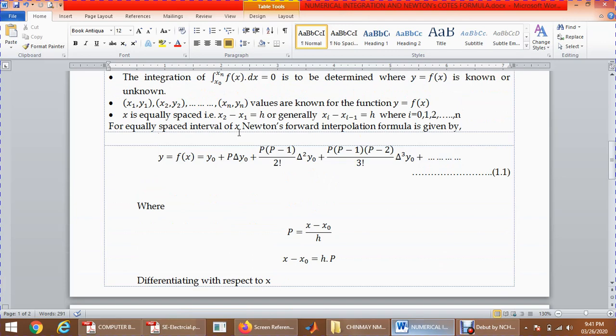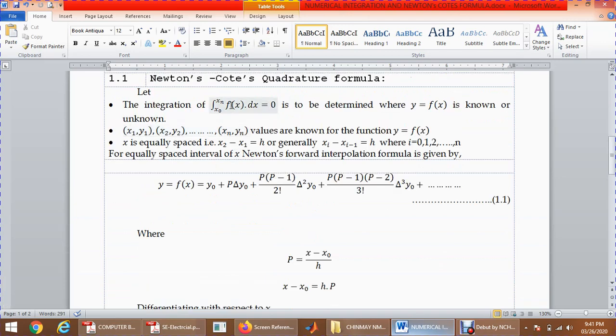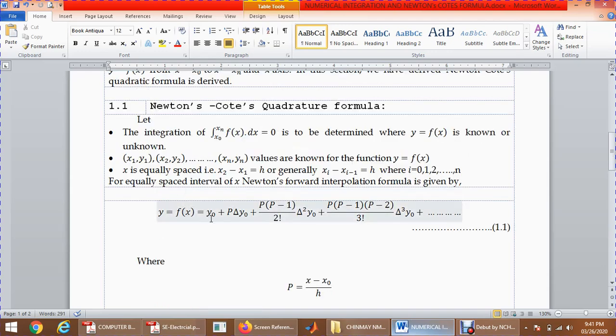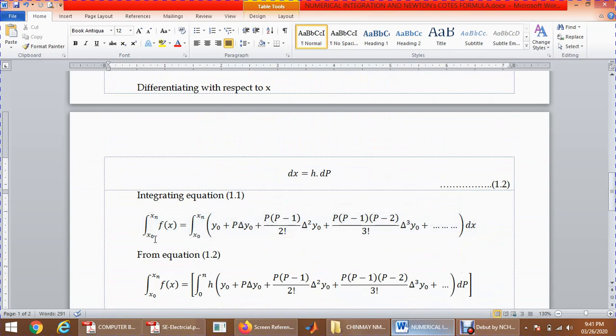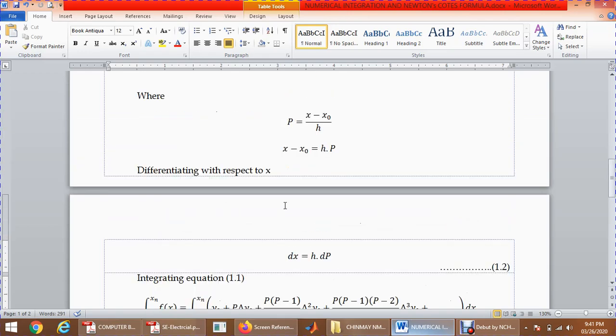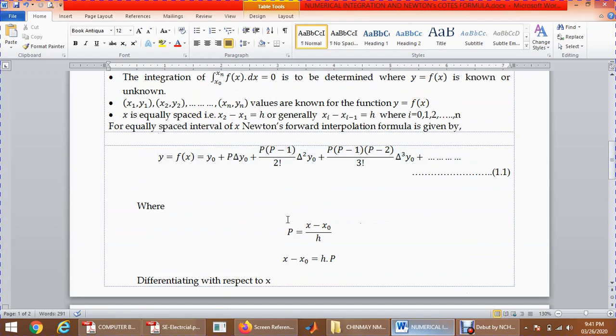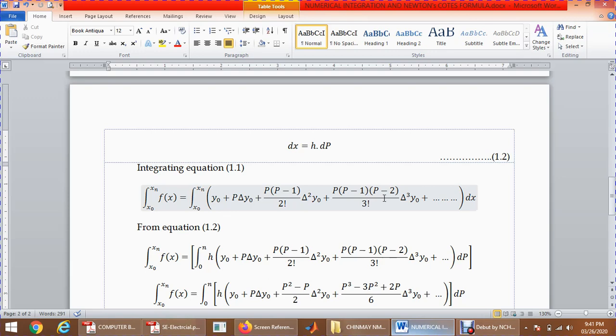Now I want to find out the integration of f(x) dx. Here y is f(x), meaning I need to take integration of this equation. Therefore, I have written integration from x0 to xn of f(x) equal to integration from x0 to xn of the right side. From the above equation, dx = h dp, so in place of dx I can write h dp.